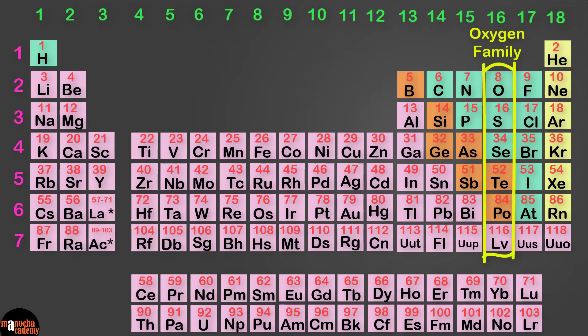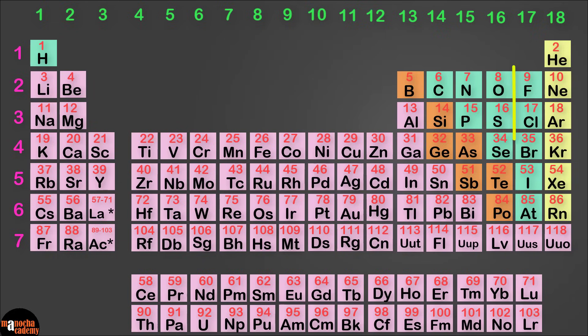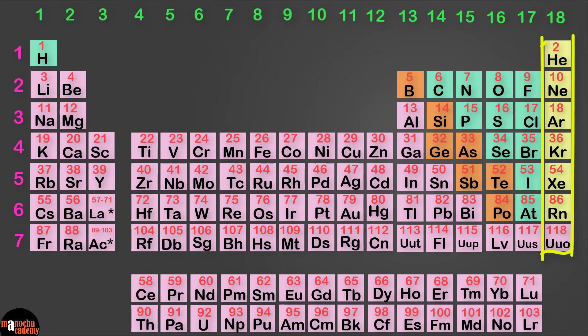Group 16 is called the oxygen family, also known as chalcogens, which means ore forming. Group 17 is called the halogen family, and the last group, group 18, are known as noble gases or inert gases.